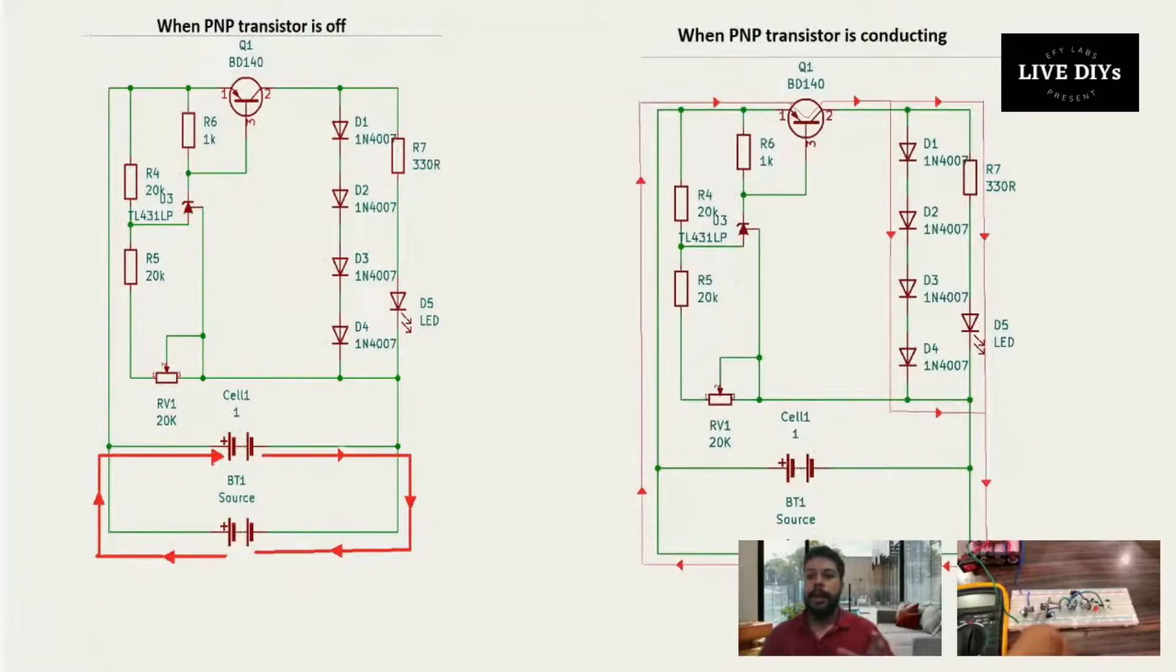We can set a specific threshold. We have set it as 4.2 volts. So whenever a battery, which is denoted by Cell 1 below, is above 4.2 volts, then the circuit is closed. The TL431 is closed, because of which the BD140 base is connected to the ground and it starts conducting.